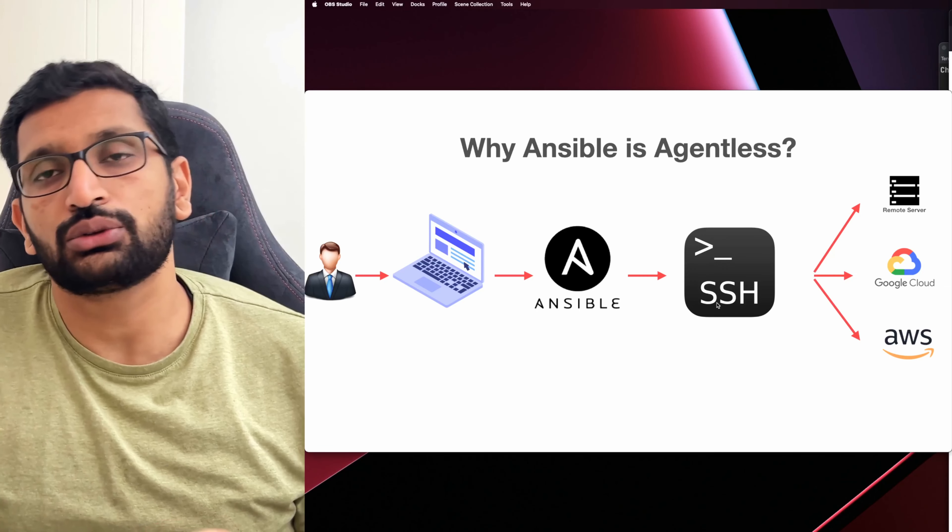After clearing the screen, the next command is `sudo yum install epel-release`. This will install the EPEL release package, which allows us to install Ansible on our CentOS machine. Type yes, and here we have successfully installed the EPEL release package.